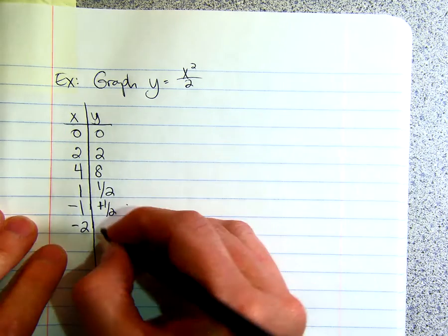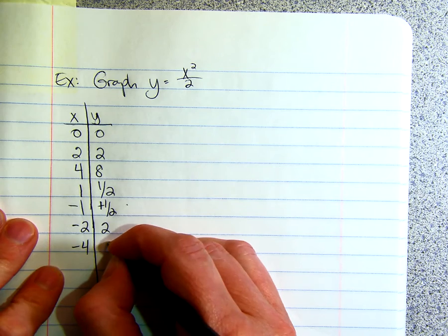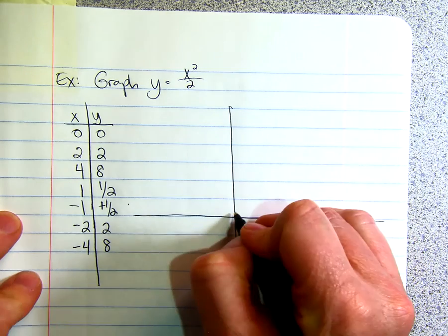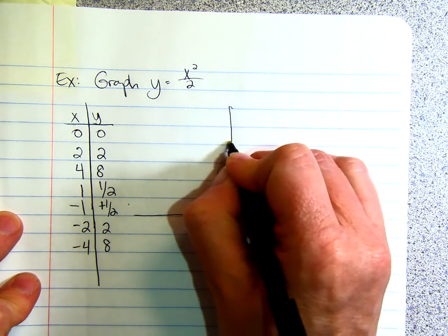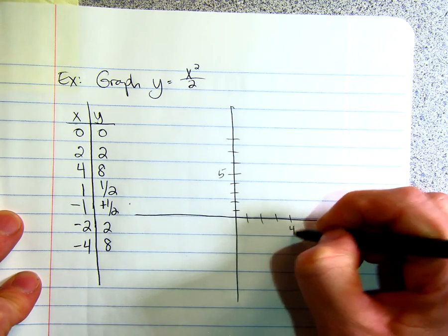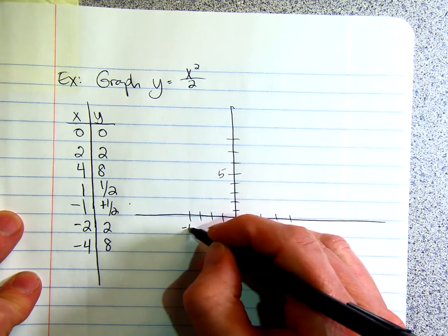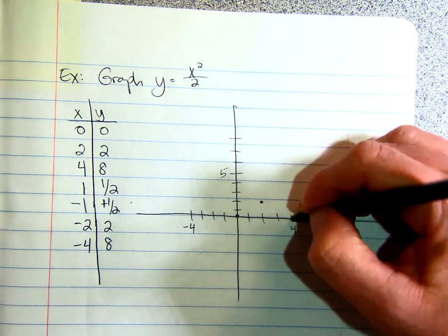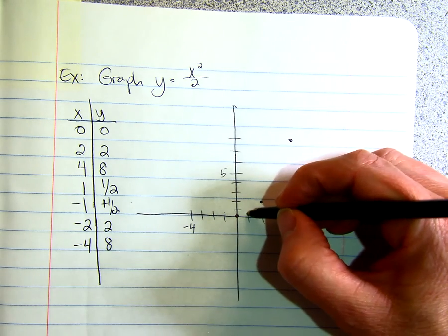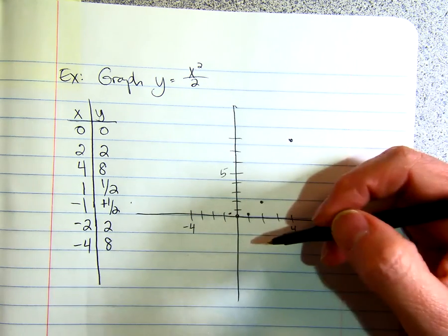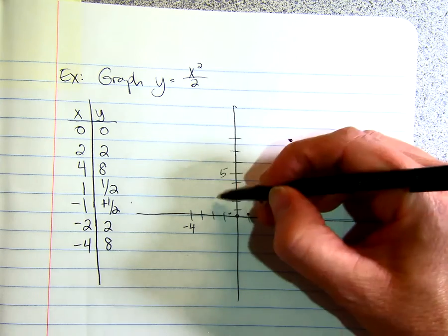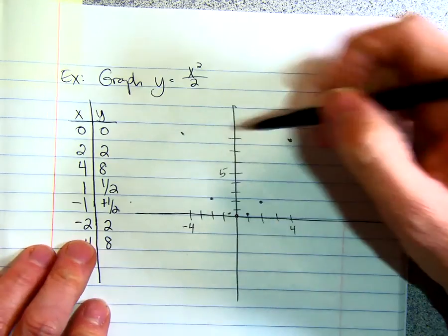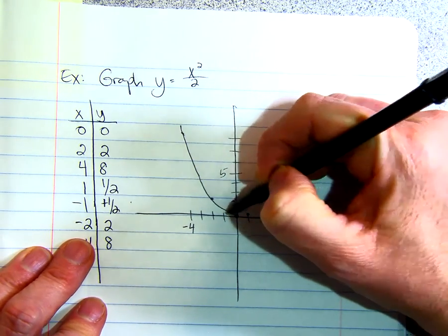How about negative 2? When you square it, you get positive 4, divided by 2 is 2. Negative 4 would give you 8. When we graph, we're going to go up 8 and to the right 4, to the left 4. We don't have to go down because our y was never negative. We had 0,0; 2,2; 4,8; 1 was 1 half; negative 1 was 1 half; negative 2 was positive 2; negative 4 was 8. Notice that it reflects in the y-axis. This shape is actually called a parabola.